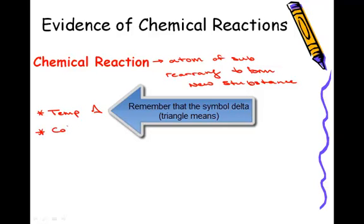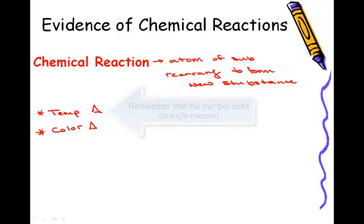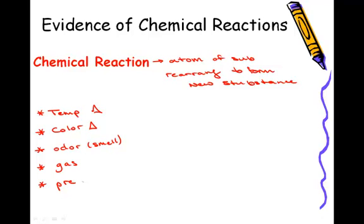If we have a color change. If we have a production of an odor, so if it starts to smell. If we have a production of a gas. The formation of a precipitate or a solid formation. And then finally, if we have the production of light.